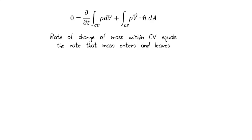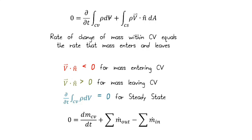So what this equation says is that the rate of change of mass within our control volume equals the rate at which mass enters and leaves. If we take a look a little more closely, we can see how some of this is going to break down. Remember, we have this term V dot N, which is a dot product.